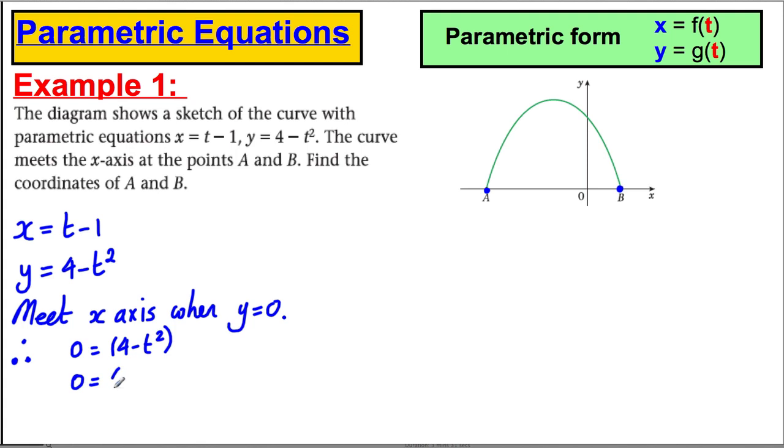And we could factorise that difference of two squares: 2 subtract t, 2 plus t. And therefore, we have two t values: t equals 2, or t equals negative 2. Now, t equals 2 gives me one of these coordinates, and t equals negative 2 gives me another one of these coordinates. So I better state them.